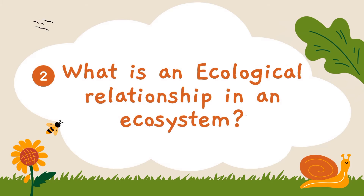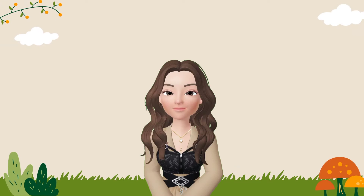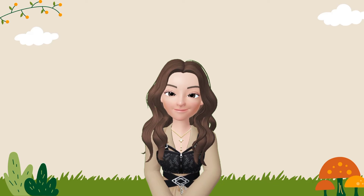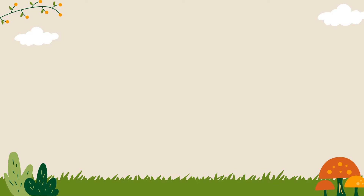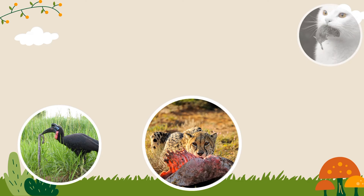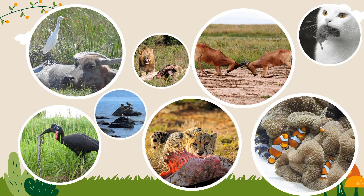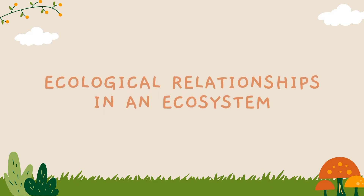What is an ecological relationship in an ecosystem? All organisms are connected to each other in an ecosystem. Organisms form relationships with each other because they are connected. Some organisms compete against each other for resources or space, while other organisms depend on each other for survival. These relationships are called ecological relationships.